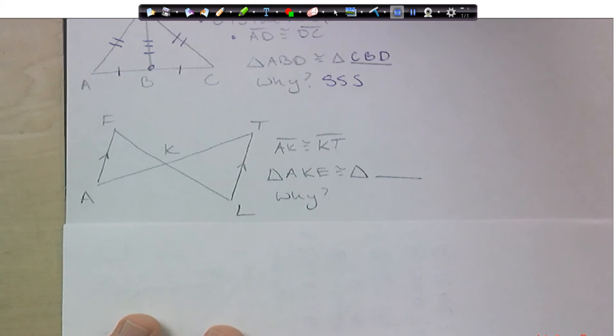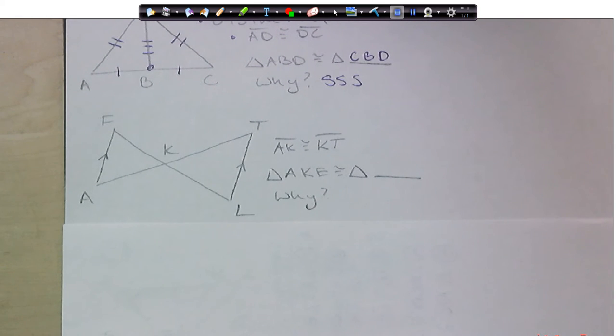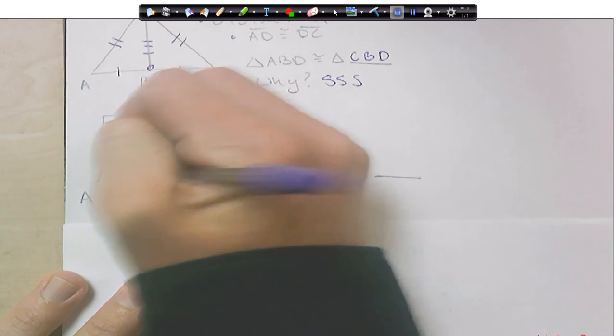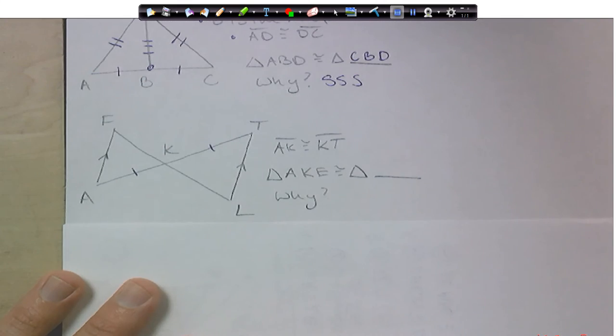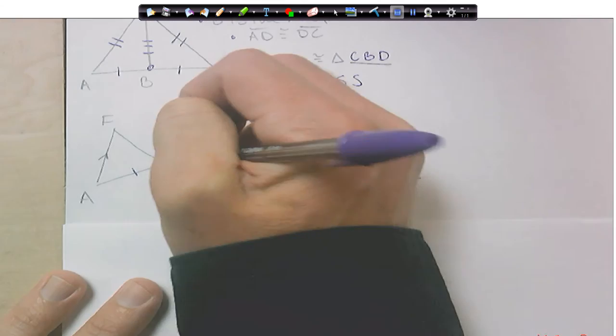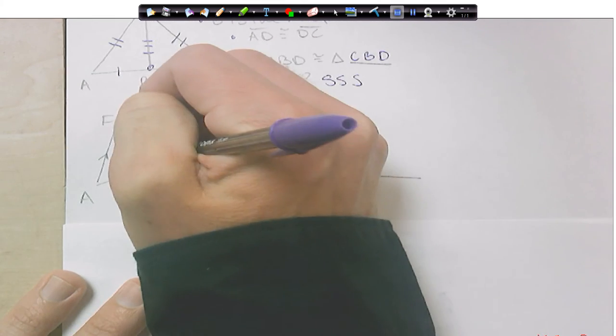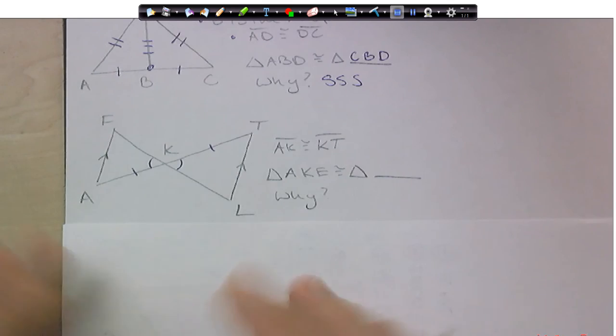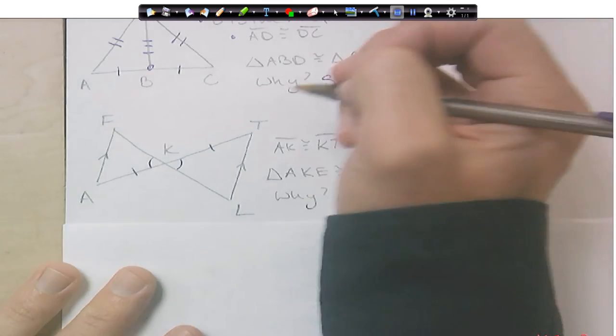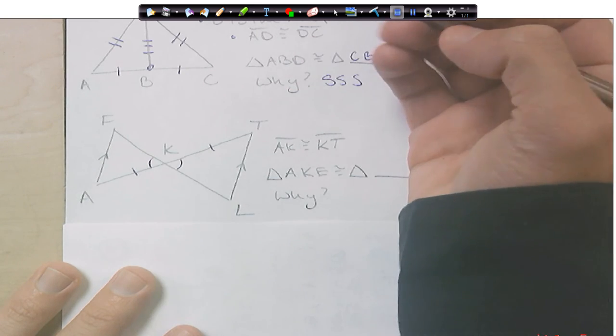Okay? Again, we have some information here. We have parallel lines given to us and AK is congruent to KT. So we can go ahead and mark that, AK and KT. And then when I'm looking at this, I also see that I have vertical angles here. And these are right here, parallel lines. So I can actually show two different ways of doing this. There's two different answers.